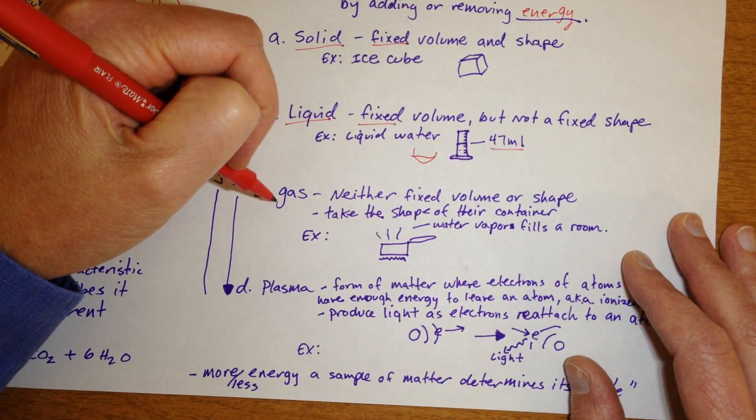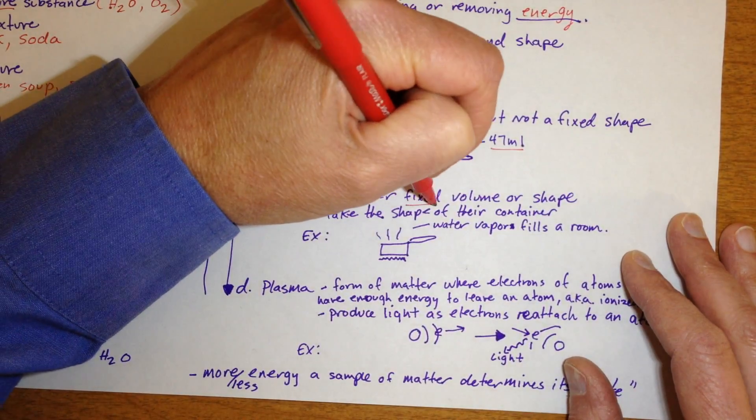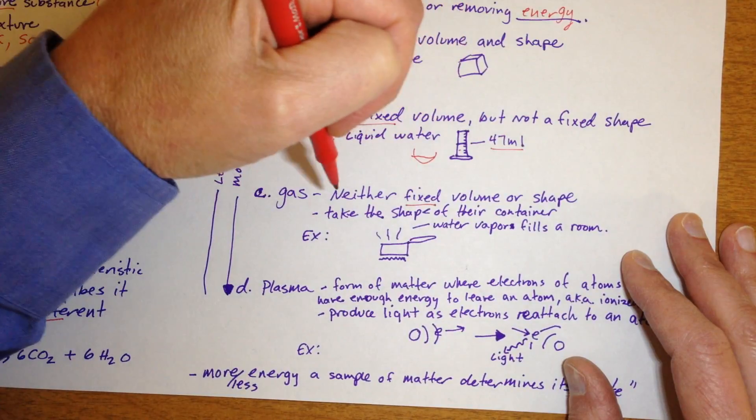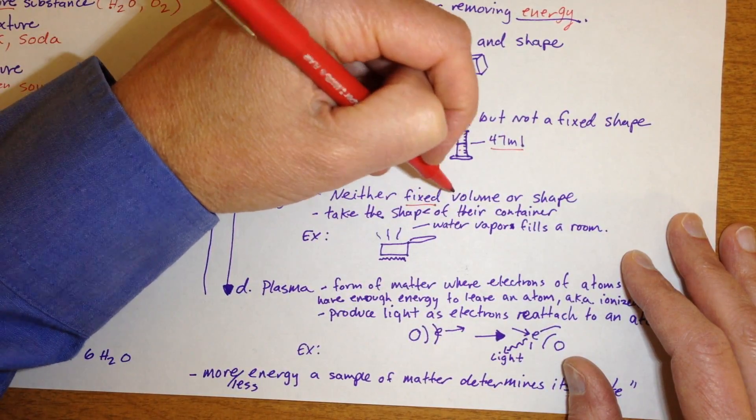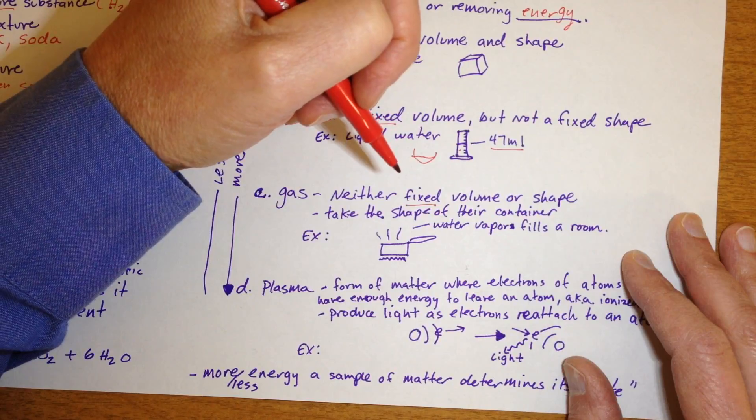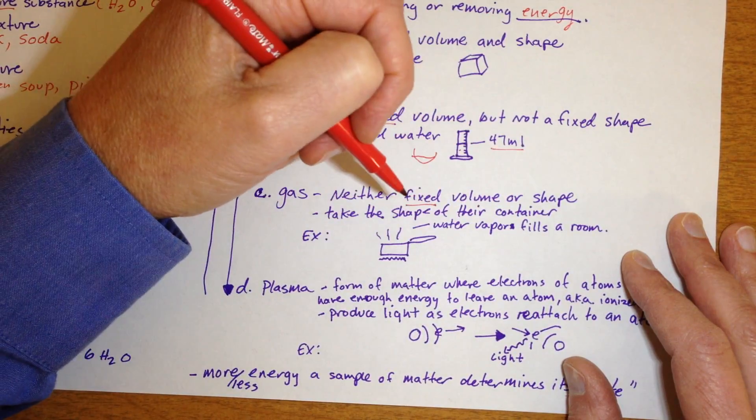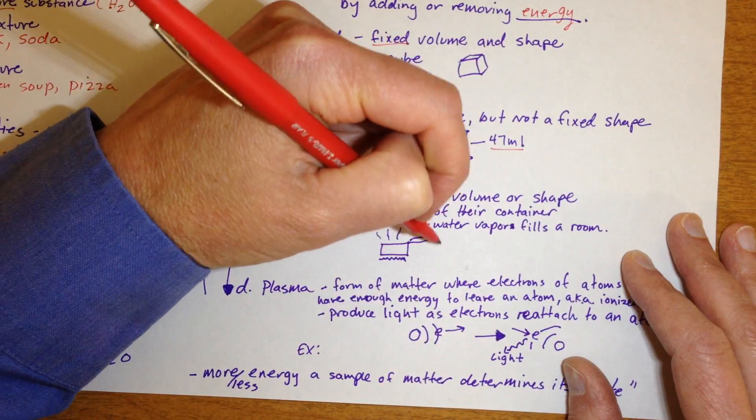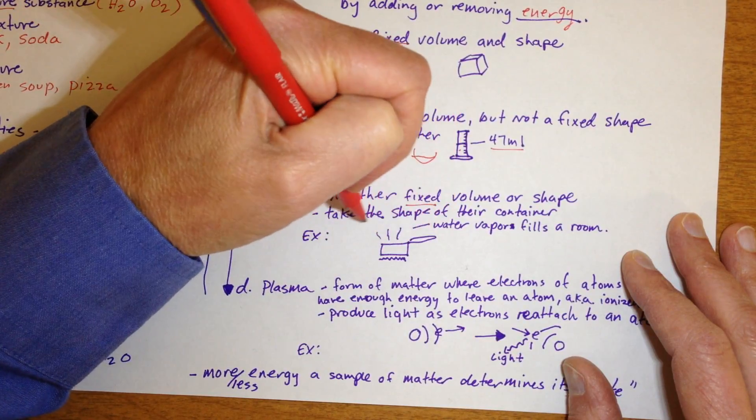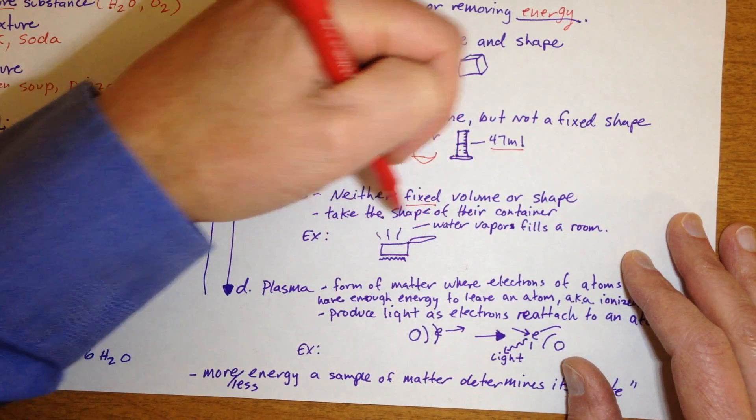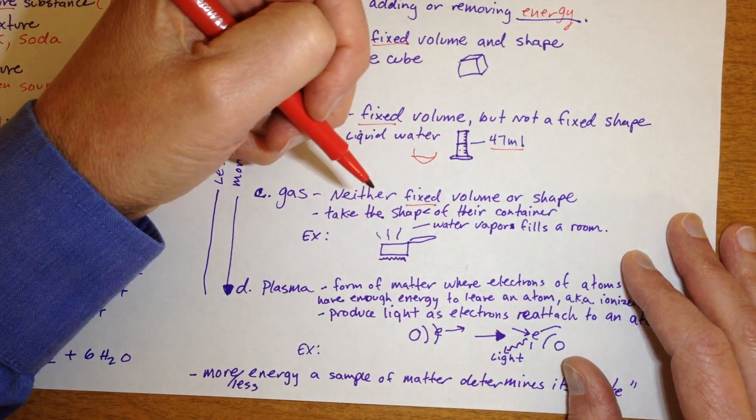And then the third state of matter is a gas. So it doesn't have a fixed volume or shape. So it can change its volume or shape. Its volume fills the space of the container that it's in, takes the shape of the container. For example, water being boiling off on a stove fills a room. So the volume of the water vapor coming into the room actually is the volume of the room. And the shape depends on what the container is.